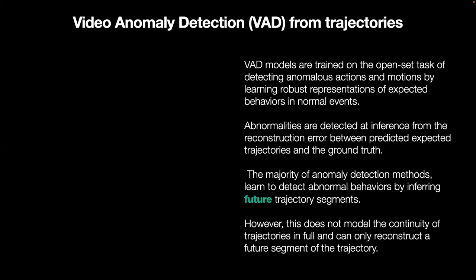Abnormalities are detected in inference based on the high reconstruction error. The majority of anomaly detection methods learn to detect abnormal behaviors by inferring future trajectory segments.